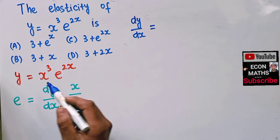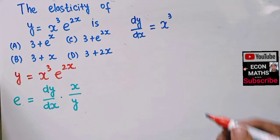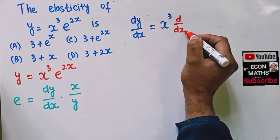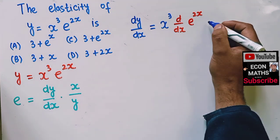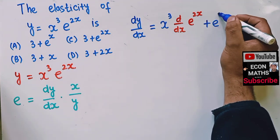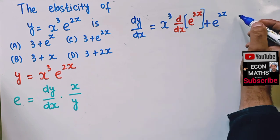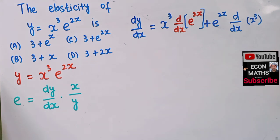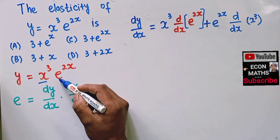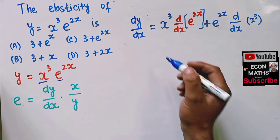Using the product rule: first we write the first function as it is, that is x³, and then we take the derivative of the second function with respect to x, that is e^(2x). Then we add and write the second function, e^(2x), and take the derivative of the first function, x³. So we write the first function, take the derivative of second, then add the second function and take the derivative of the first.